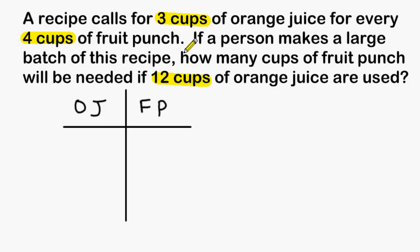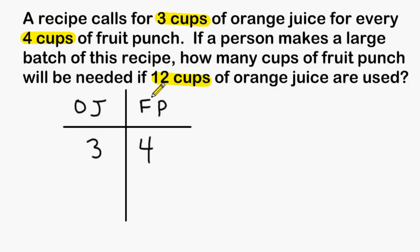At the beginning of the problem it says that it takes 3 cups of orange juice for every 4 cups of fruit punch to make this recipe. We have to figure out how many cups of fruit punch will be needed if 12 cups of orange juice are used. Be careful to put this 12 in the correct category — since they are using 12 cups of orange juice, we must write the number 12 in the column labeled orange juice.